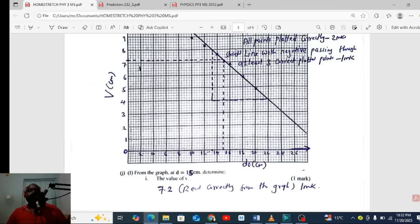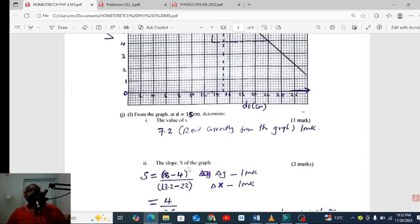Where you meet the straight line, draw another dotted line across, read this value, and that is the answer here. Put it in one decimal place. If you get seven, put it 7.0.